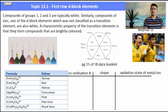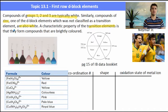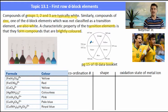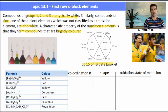Compounds of groups 1, 2 and 13 — the aluminium group — are typically white, and the same goes for compounds of zinc, which we didn't classify as a transition metal. One of the properties of transition metals is that they form coloured compounds, and there are a number of examples in those volumetric flasks on the left. You are given a colour wheel in the IB on page 15 of the data book, so you don't have to remember the complementary colours — you just need to know how to use it.